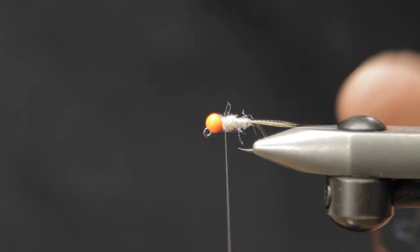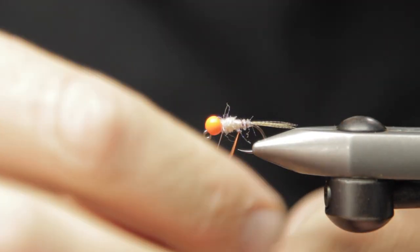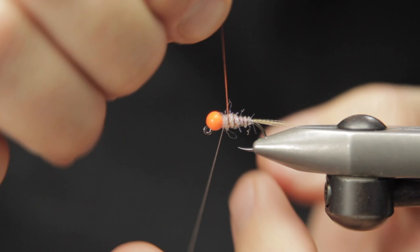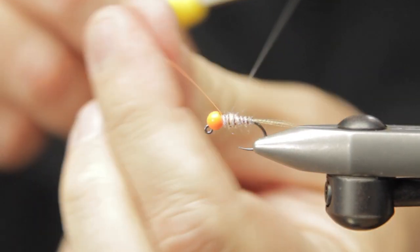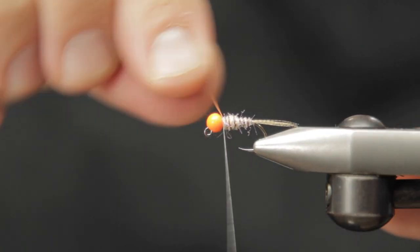We're going to counter-wrap with our Uni Wire, and you can take these turns as wide or as narrow as you like. We're going to bring that all the way up to the bead just to make sure this fly is bombproof and will last for a lot of fish. I typically will hide the tag end of the wire inside the slot of the bead.